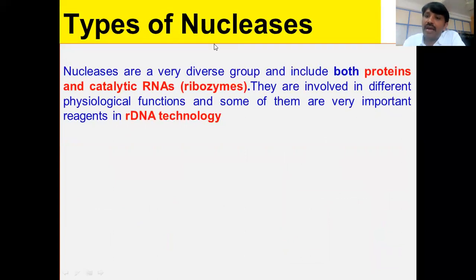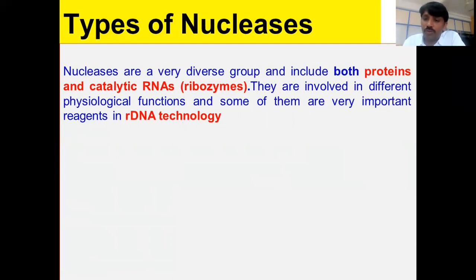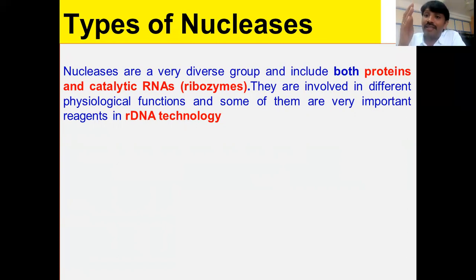Regarding classes of nucleases, they can be either proteins or catalytic RNA. Nucleases are a very diverse group. Most of the time we think of them as only protein enzymes, but there is a specific enzyme called a ribozyme — that is an RNA which has catalytic activity and can degrade RNA. So an RNA that degrades RNA is also called a nuclease — a ribozyme.